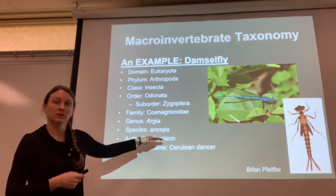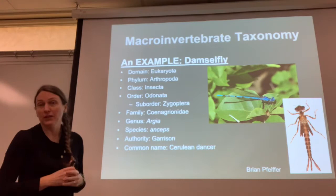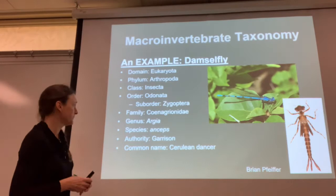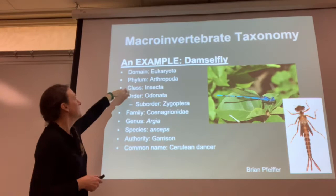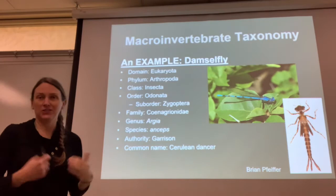This damselfly happens to be a cerulean dancer and its genus is Argia. Its species name is Anseps and its authority is Garrison. Garrison was the first person to name this organism, and so that becomes the authority. It's really commonly used with plants, but we're going to try to use the authority when we can. It's in the family Coenagrionidae, in the order Odonata and the suborder Zygoptera, in the class Insecta. It is an insect, in the phylum Arthropoda, meaning jointed legs, and in the domain Eukaryota — just like me, just like you.